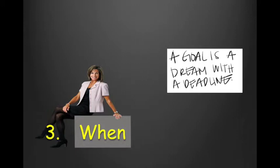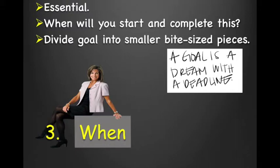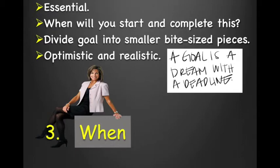The next component is the when. Vision boards don't involve timelines, but for your action board the when is essential. When are you going to complete this goal? Not setting a deadline or timeline is one of the greatest reasons people don't achieve or even work toward their goal. A goal is a dream with a deadline. Identify exactly when you intend to make your goals and dreams come true. Try to divide your final goal into smaller bite-sized pieces with specific dates for each. You can break up your timeline into daily, weekly, or monthly mini-goals — make it optimistic to challenge yourself, but also realistic.